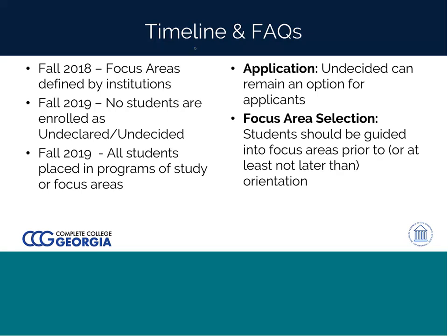Focus areas are actually available to be used now — many campuses already have developed them, and a handful of campuses use them. It's simply a matter of waiting for the technology to catch up. By fall 2019 that technology will be in place. On an application, undecided can remain as an option for applicants. However, if an applicant indicates they are undecided, the expectation is that something will happen for that student prior to or at the very latest at orientation, so that they are able to select their focus area.